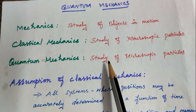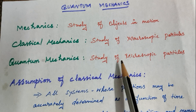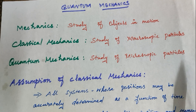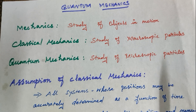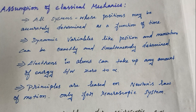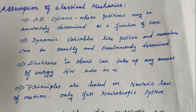Quantum mechanics is the study of microscopic particles such as protons, neutrons, electrons, atoms, and molecules. Classical mechanics assumes that all systems are macroscopic, and their positions may be accurately determined as a function of time.